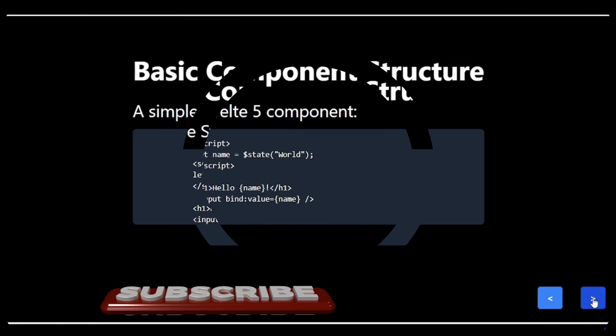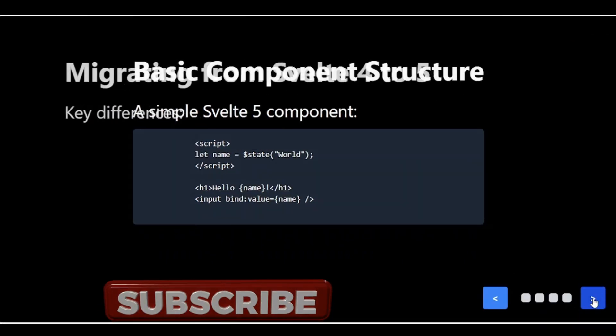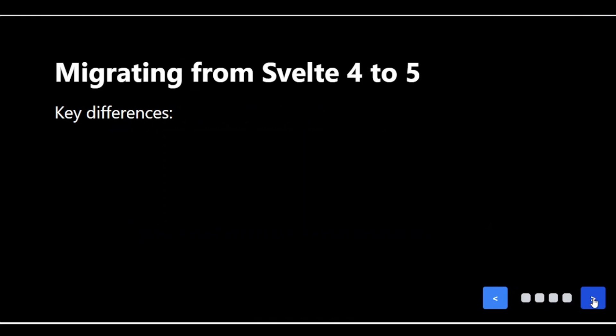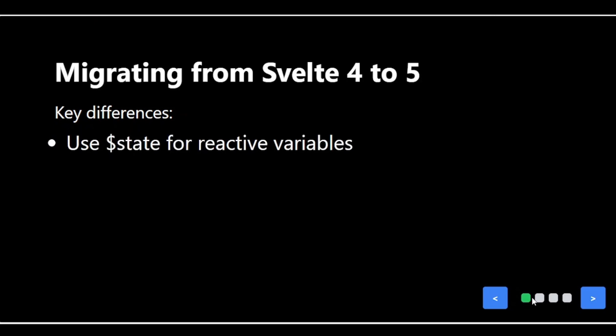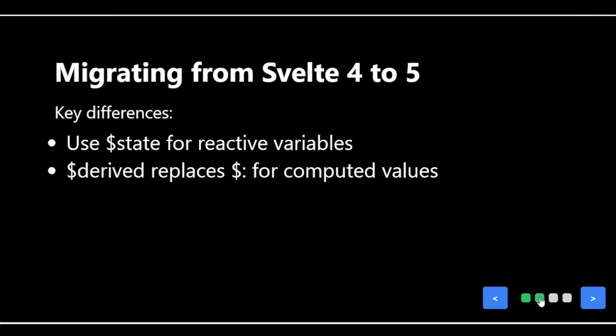For those of you coming from Svelte 4, let's talk about migration. There are a few key differences to keep in mind. We now use $state for reactive variables instead of plain let declarations. $derived replaces the dollar syntax for computed values.